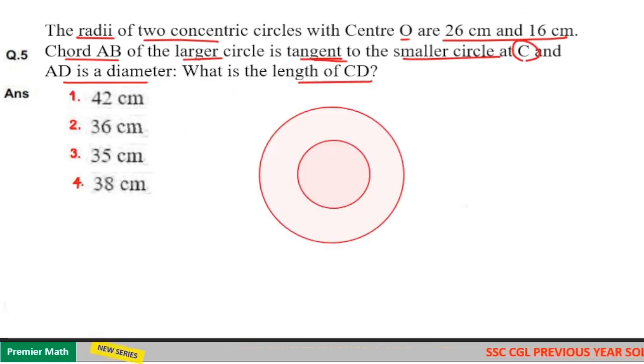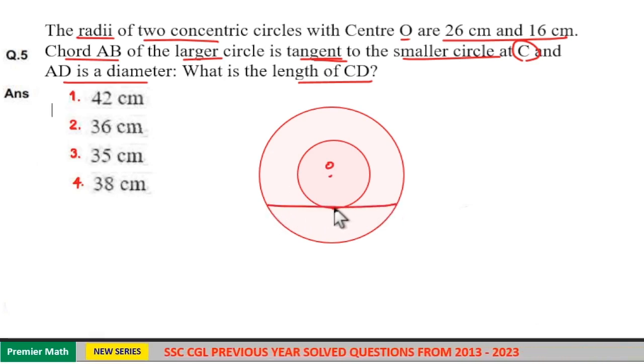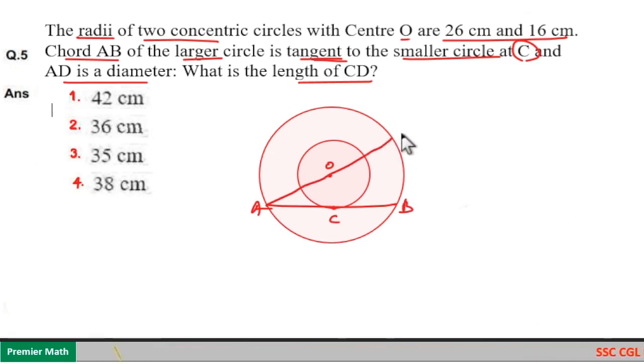Here, these two are concentric circles with centre O and chord AB. Chord AB is tangent to the smaller circle at point C, and here AD is a diameter. So we have to find out what is the length of CD here.